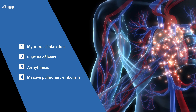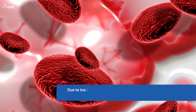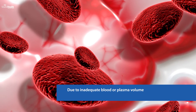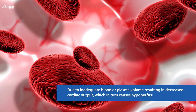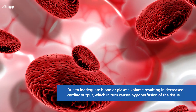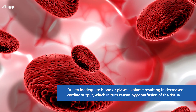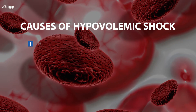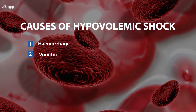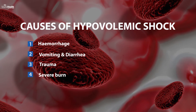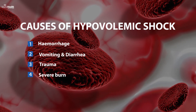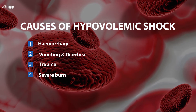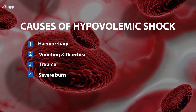Hypovolemic shock, also called cold shock, occurs due to inadequate blood or plasma volume, resulting in decreased cardiac output, which in turn causes hypoperfusion of the tissues. Causes of hypovolemic shock include hemorrhage, diarrhea, vomiting, trauma, and severe burns.